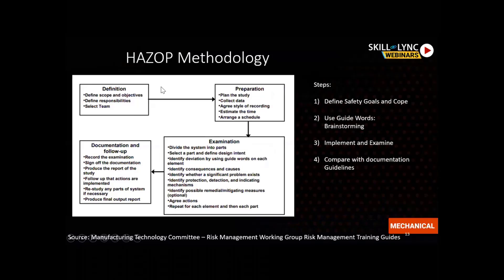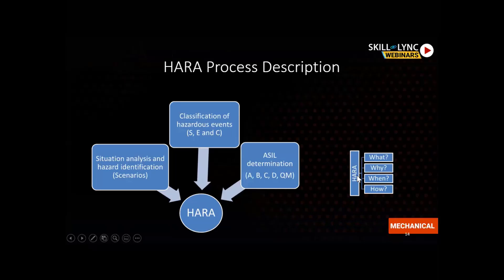For the HAZOP methodology, it's important to define the safety goal for assessment, then use guide words — a technical term for brainstorming. For example, guide words might be left lane, right lane, or left indicator. When a hazard or crash happens, using these guide words, it examines and evaluates the situation and compares it with the original documentation guidelines. For the HARA process: first, ask what are the safety goals, why are these defined goals required, when will they come into implementation, and how? ASIL levels A, B, C, D are used — D is the most safe and A is the least. Classification of events and situation analysis is done based on scenarios, and that makes up the overall HARA process.